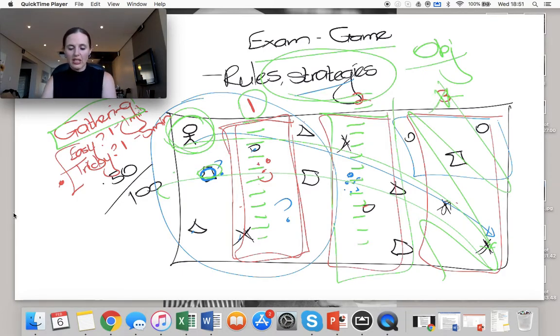The problem is you'll never get to question three. You may get 40% for question one and 40% for question two, but the fact that you never attempted question three means you fail anyway.